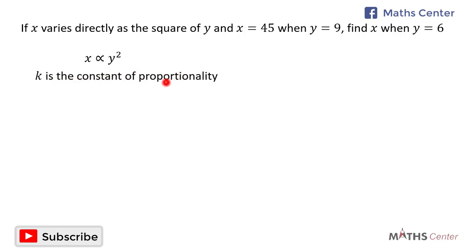Let's assume that k is the constant of proportionality. If k is the constant of proportionality, we will replace the proportional sign with an equal to sign and multiply y squared by k, and so you have x is equal to ky squared.